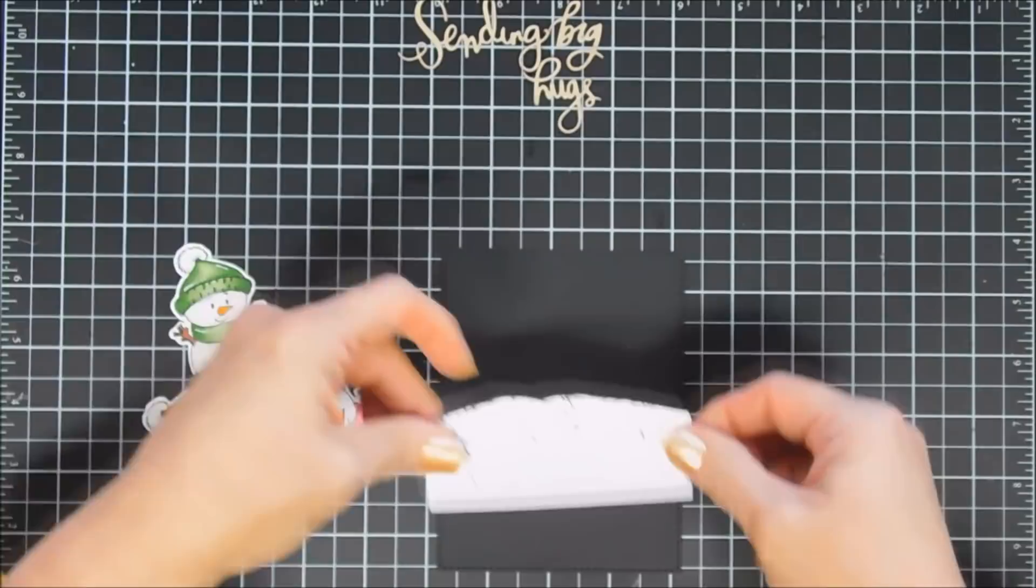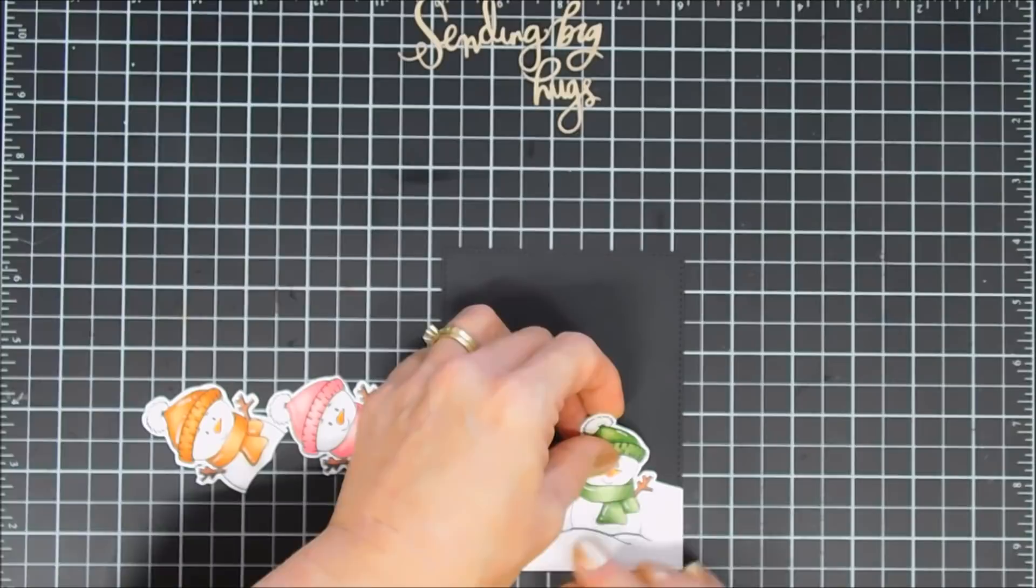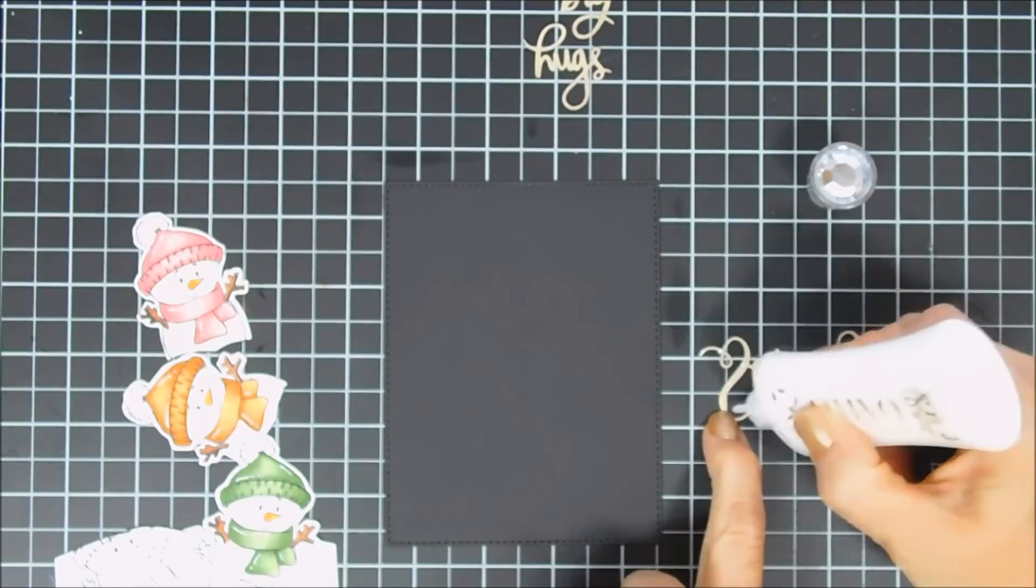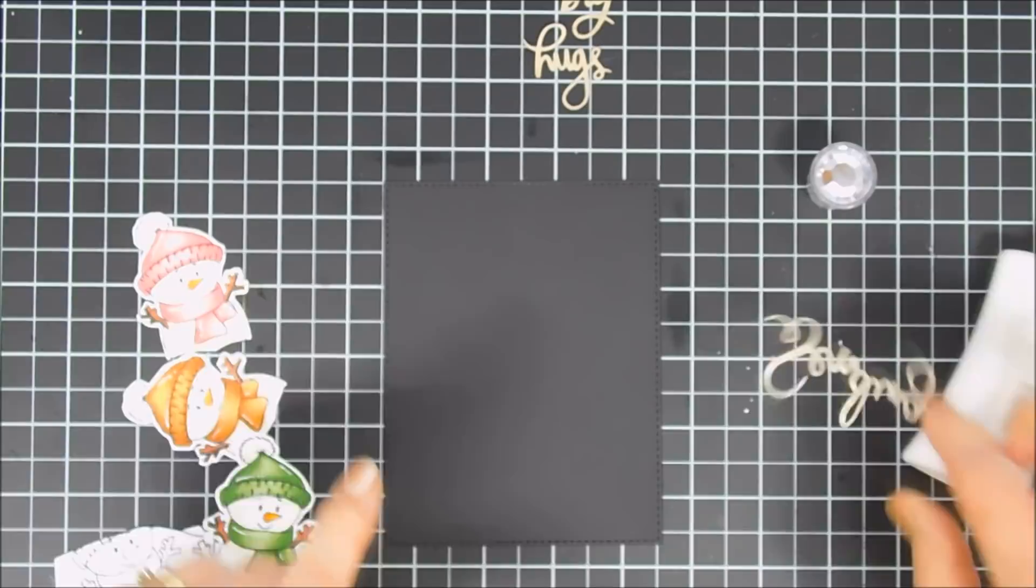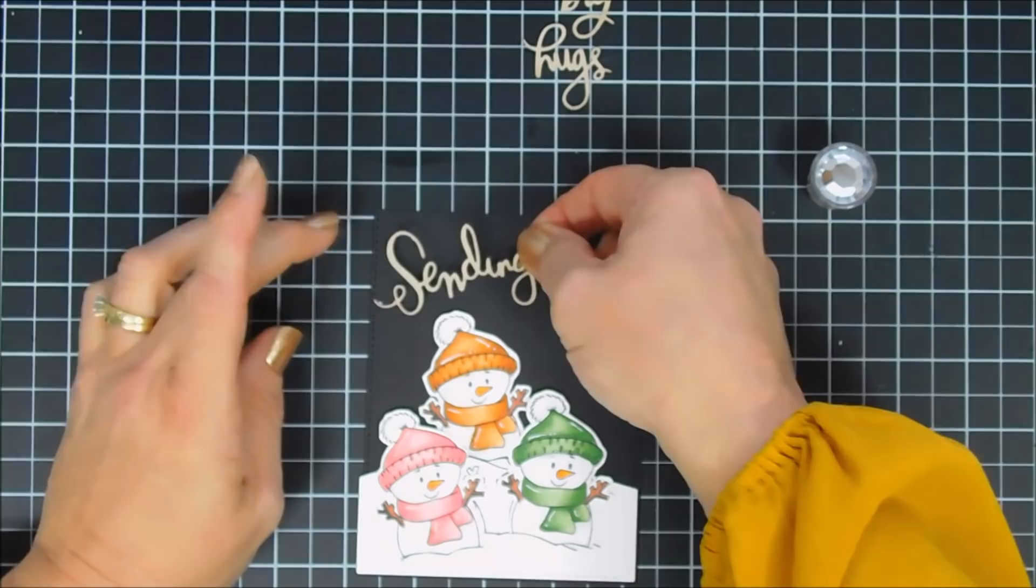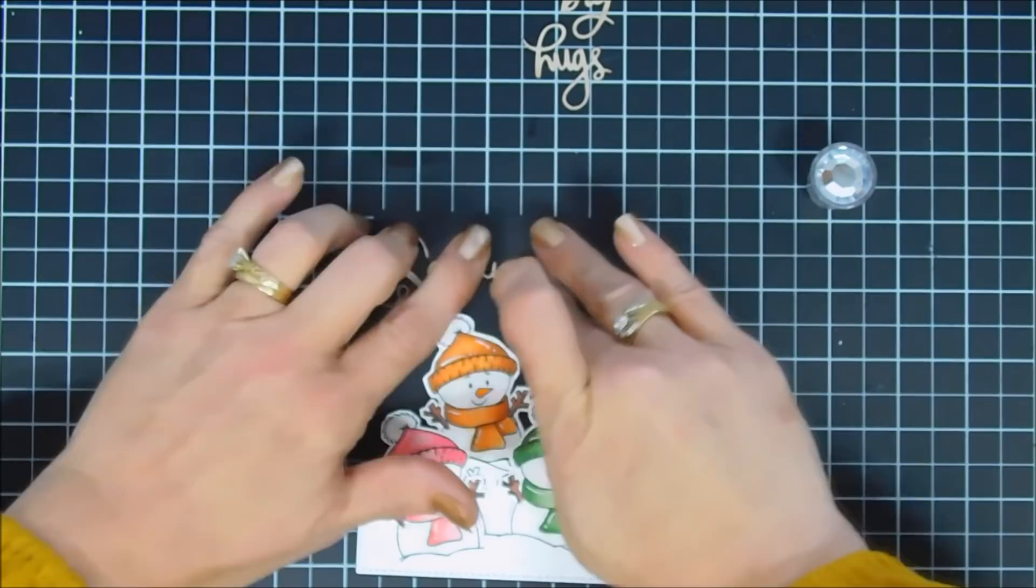Okay, we are going to kind of arrange our scene, our snowmen. Once they're placed where I want them we can go ahead and glue down our sentiment. This says Sending Big Hugs. I thought that the sentiment would go perfect with these little guys because their hands are stretched out. Well, technically I guess snowman's hands are always stretched out, but they look like they're giving big hugs so I just thought the sentiment went really well with it.